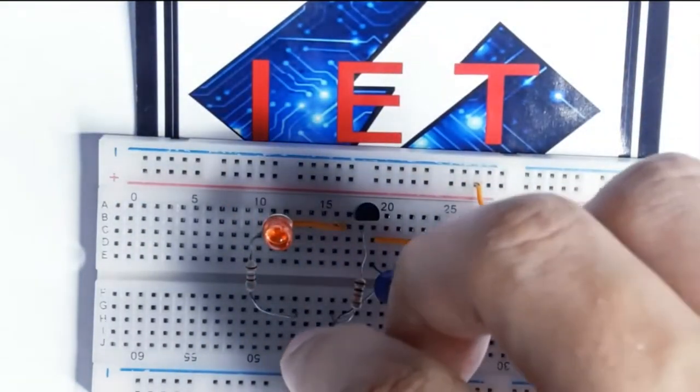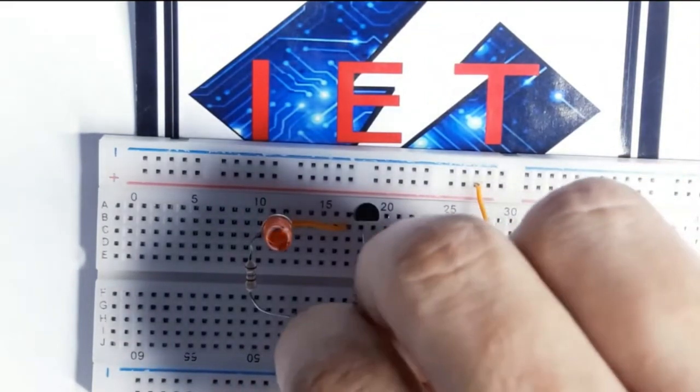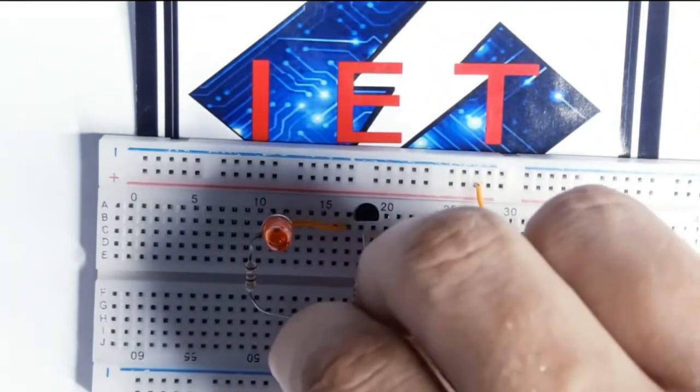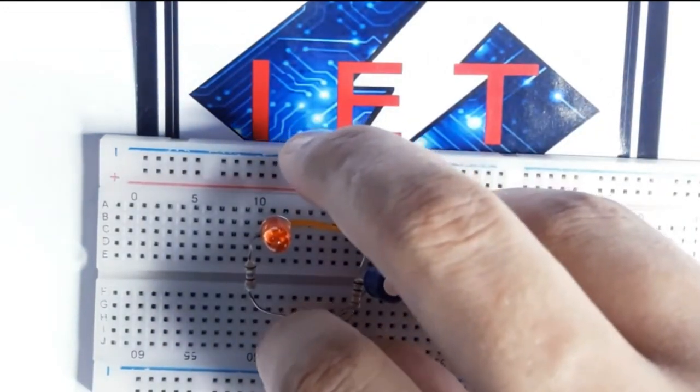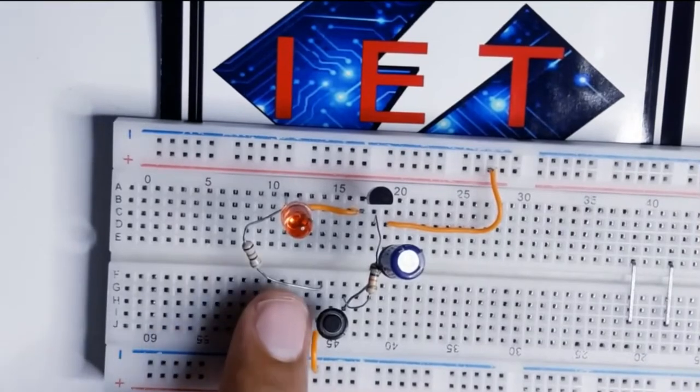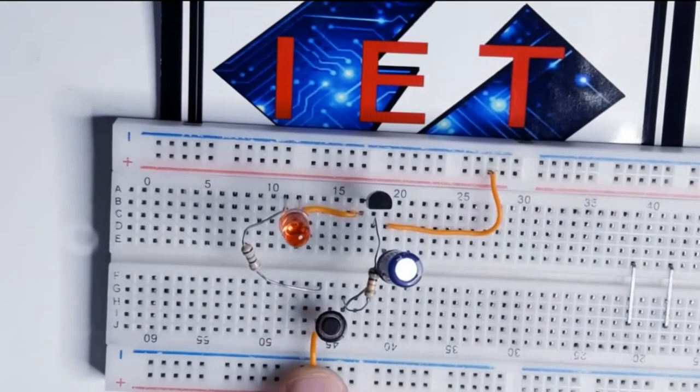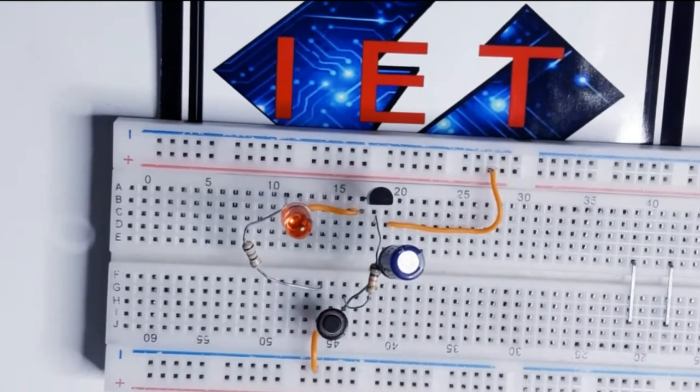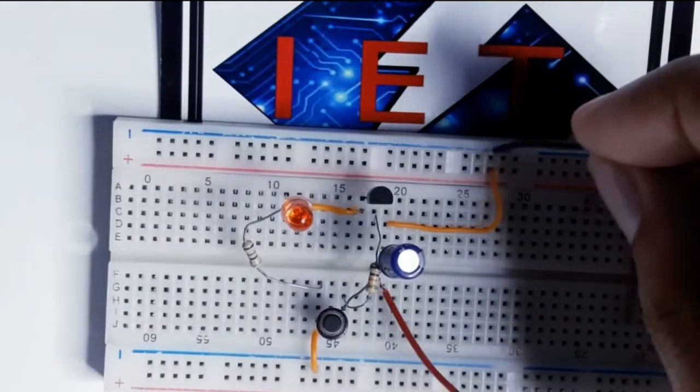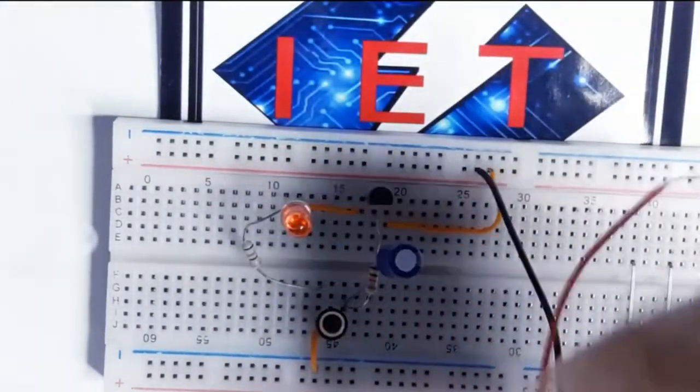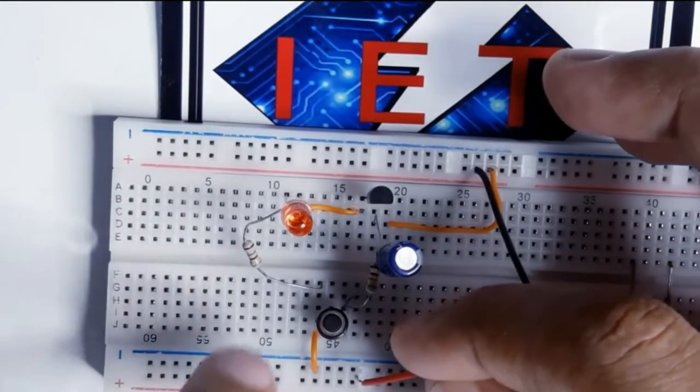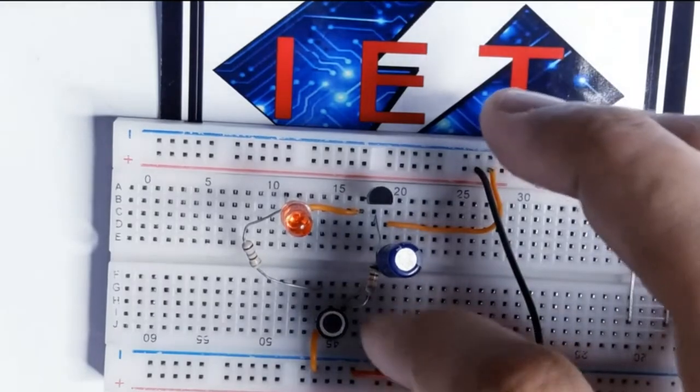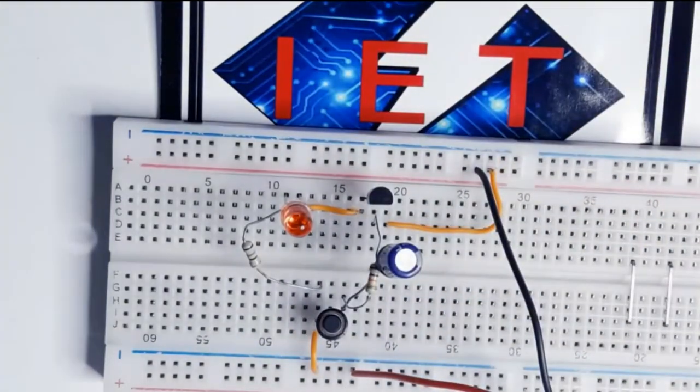As I have changed this resistor point and this jumper point, now let's attach the battery. The negative side will go towards the collector and the positive side will go towards over here. Now let's check the circuit.